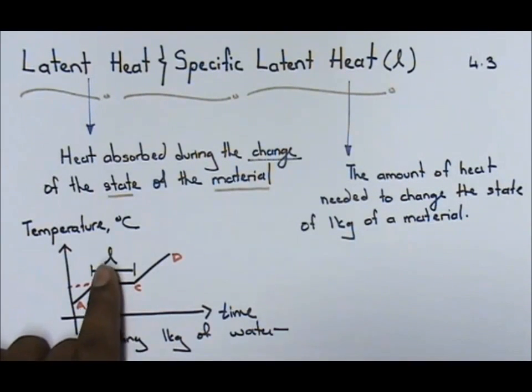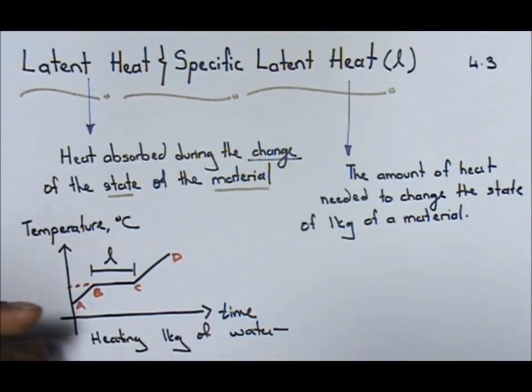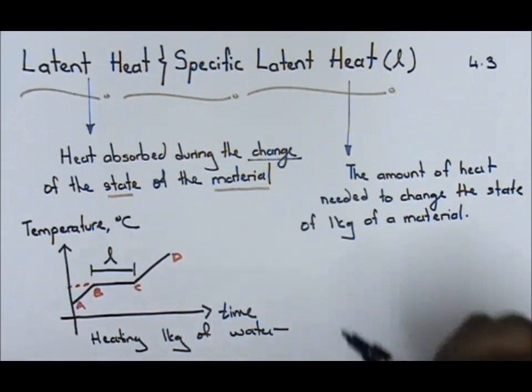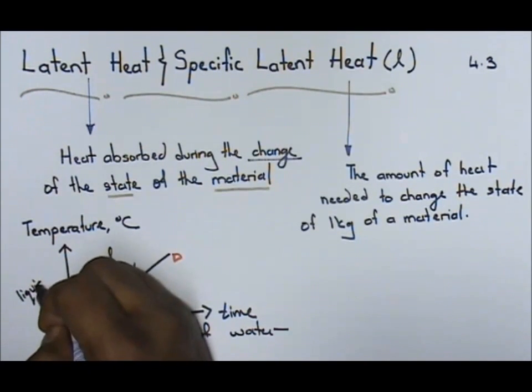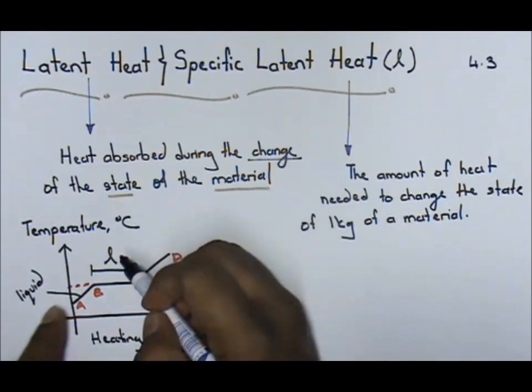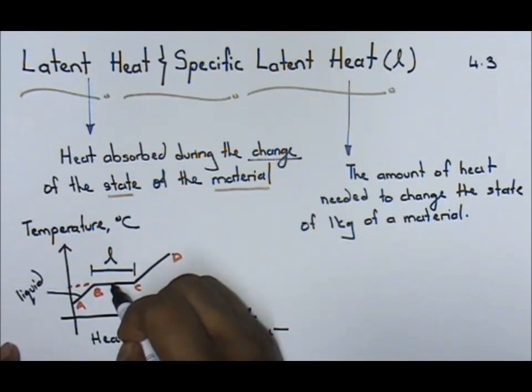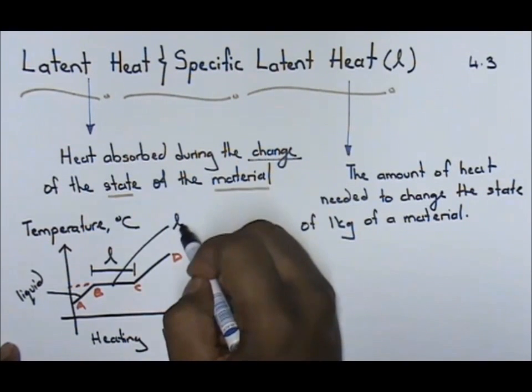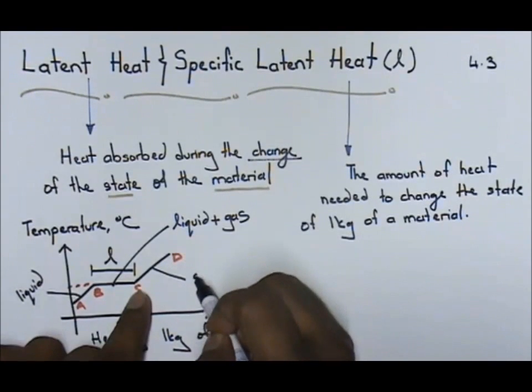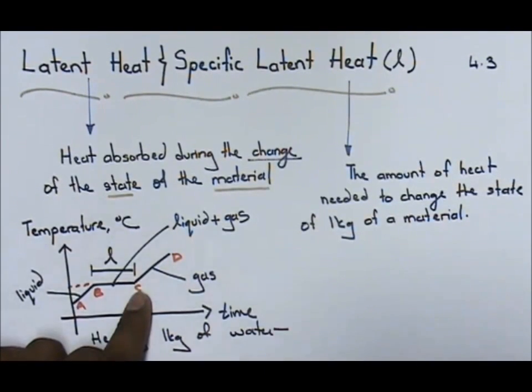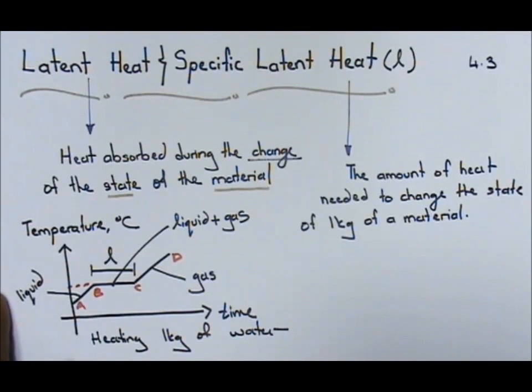From B to C, the amount of energy needed for that particular water to change its state of matter from liquid to gas. From A to B, it's going to be in liquid form. From B to C, it's going to be liquid plus gas. And the moment it touches C to D, it's going to be purely in gas form.